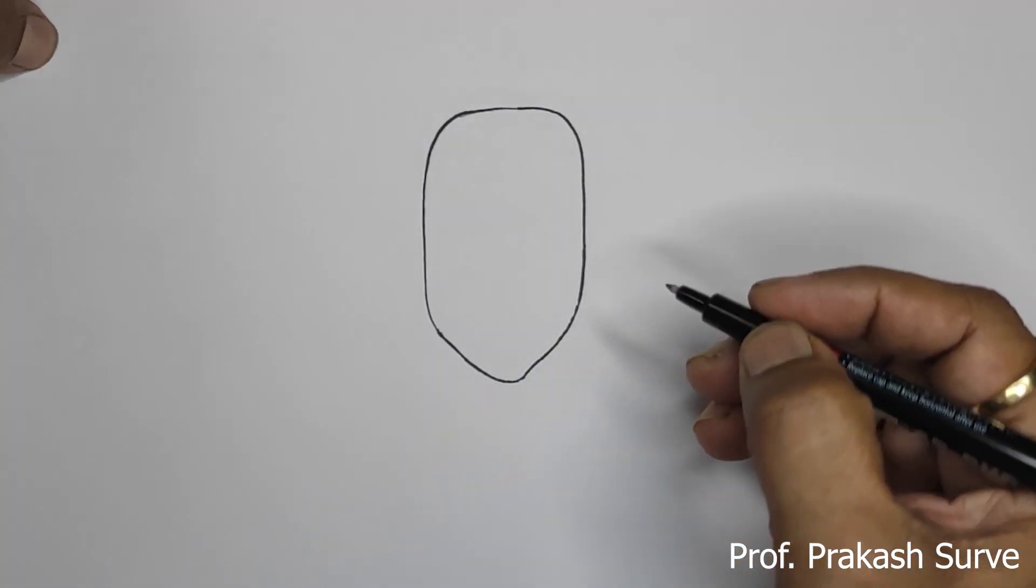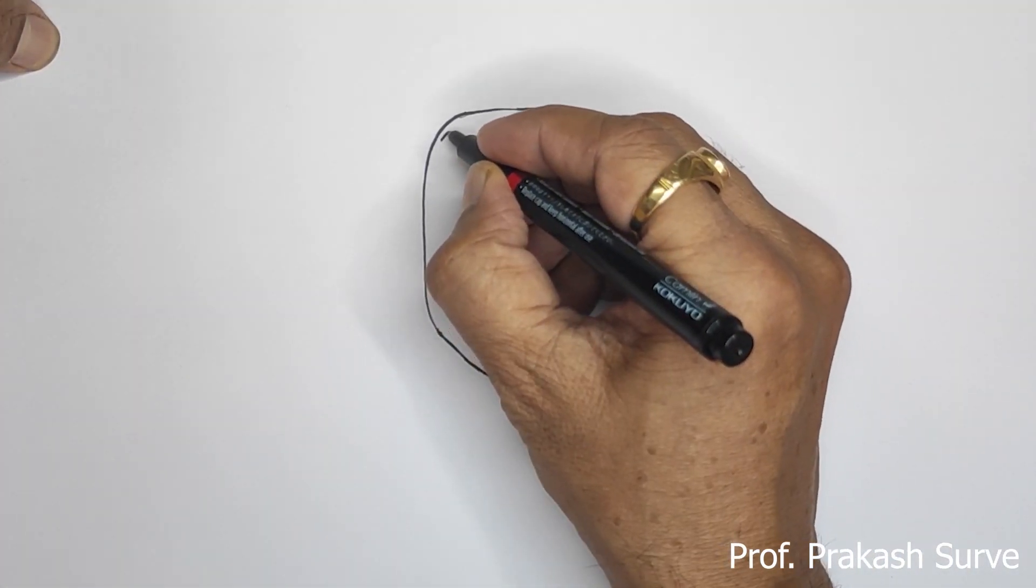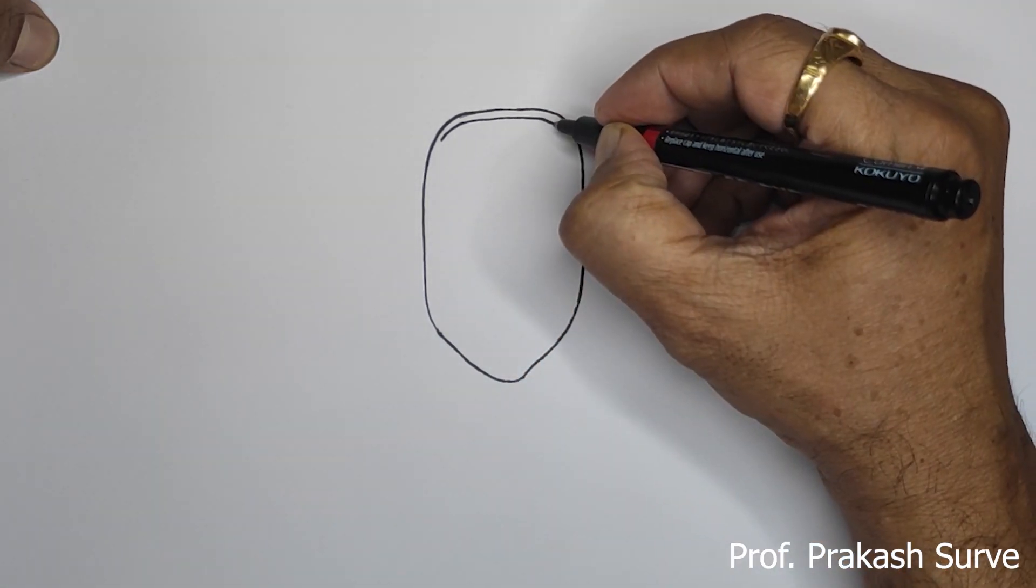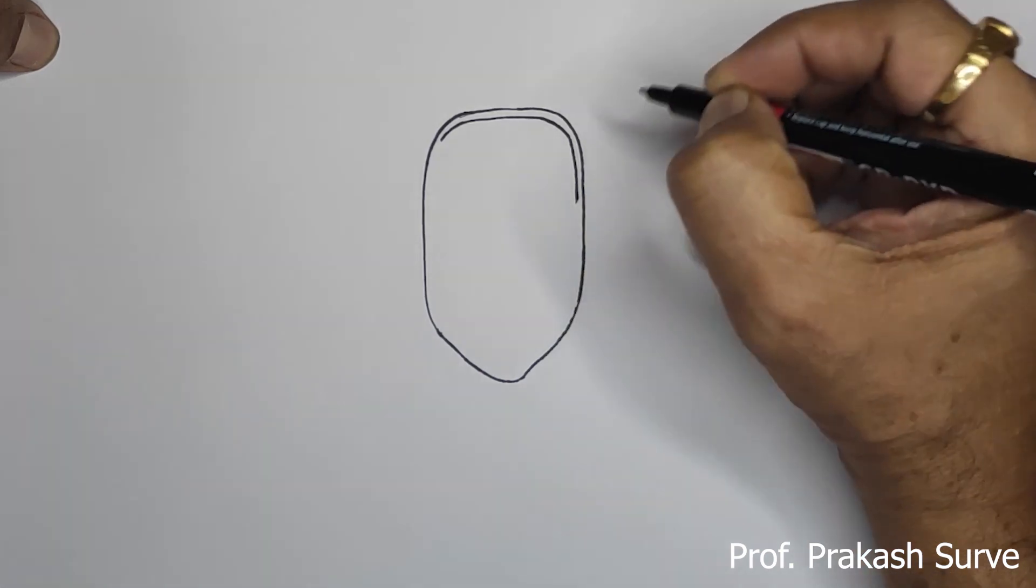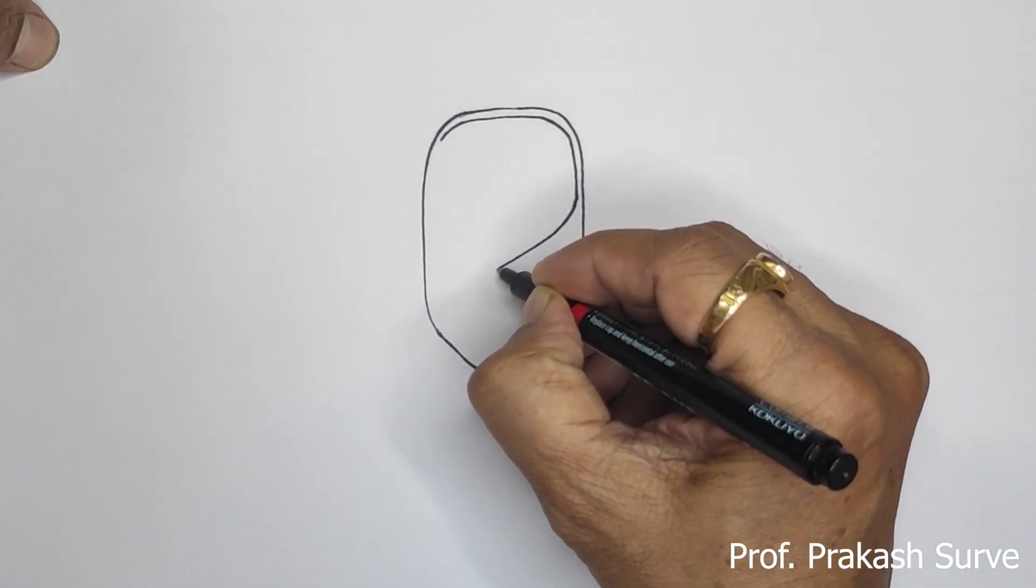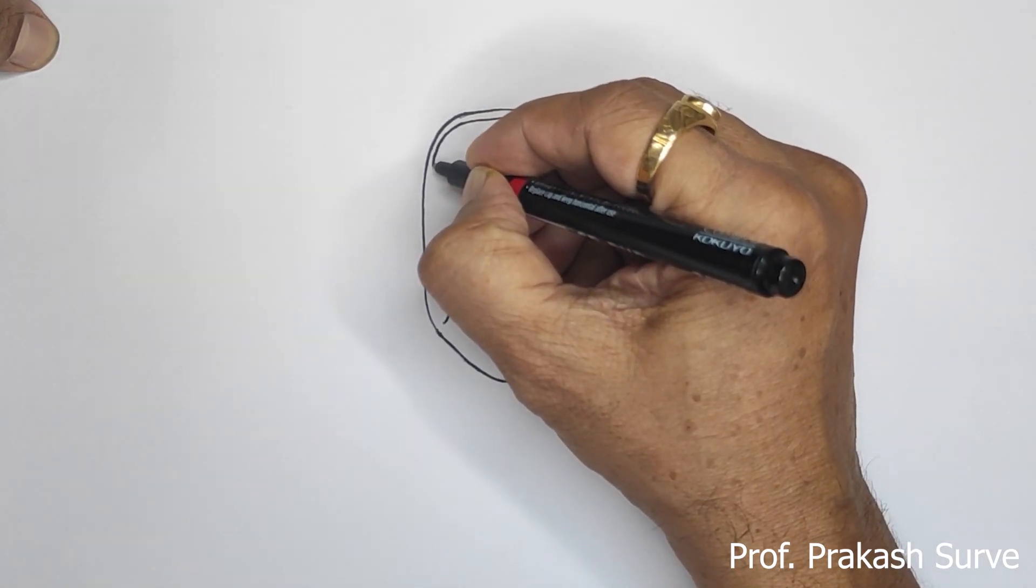Join here. Okay, now next we'll draw the corresponding line. Here we'll bring it to here, join from here.